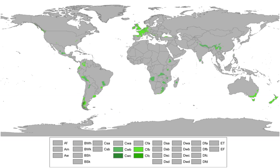In addition, some east coast areas such as some higher elevations along the southern Appalachian Mountains as well as Block Island, Cape Cod, Martha's Vineyard, and Nantucket have a similar climate.